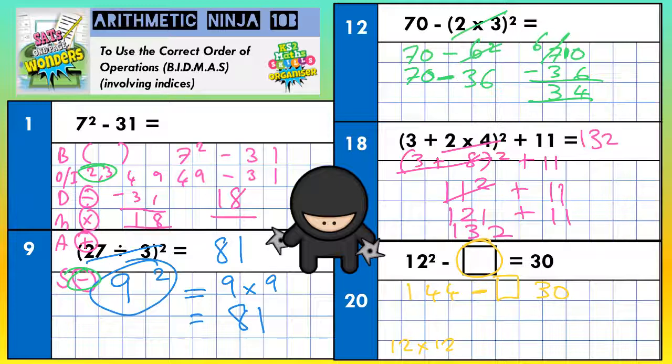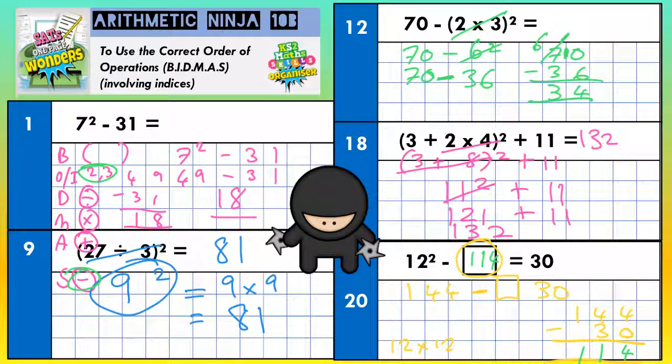Okay, now we need to figure out what that something is. Well, if we do 144 take away 30, whatever's left will be our mystery box. 4 take away nothing is 4. 4 take away 3 is 1. And 1 take away nothing is 1. So you need to fill that box in with 114. Now we've had a go at all five questions. Time for you to have a go at the ones we've missed. Good luck.